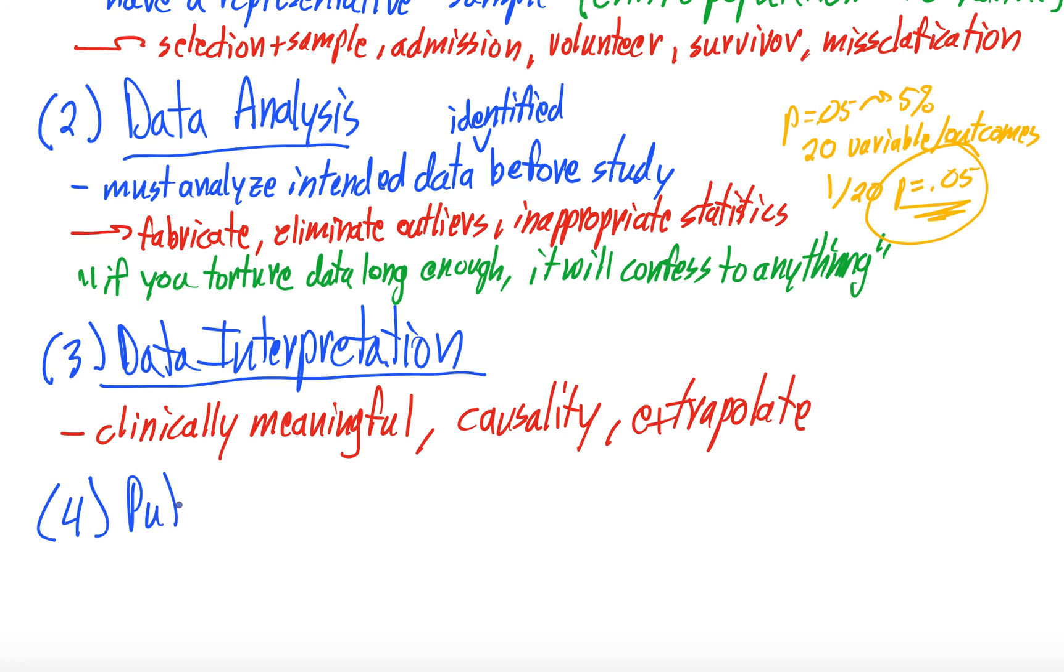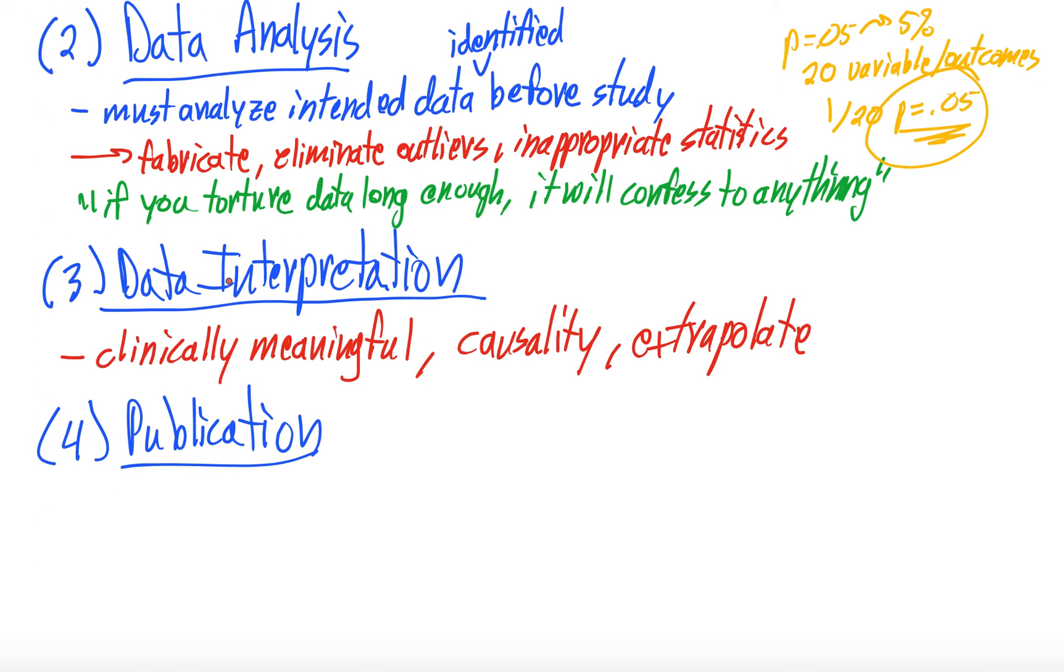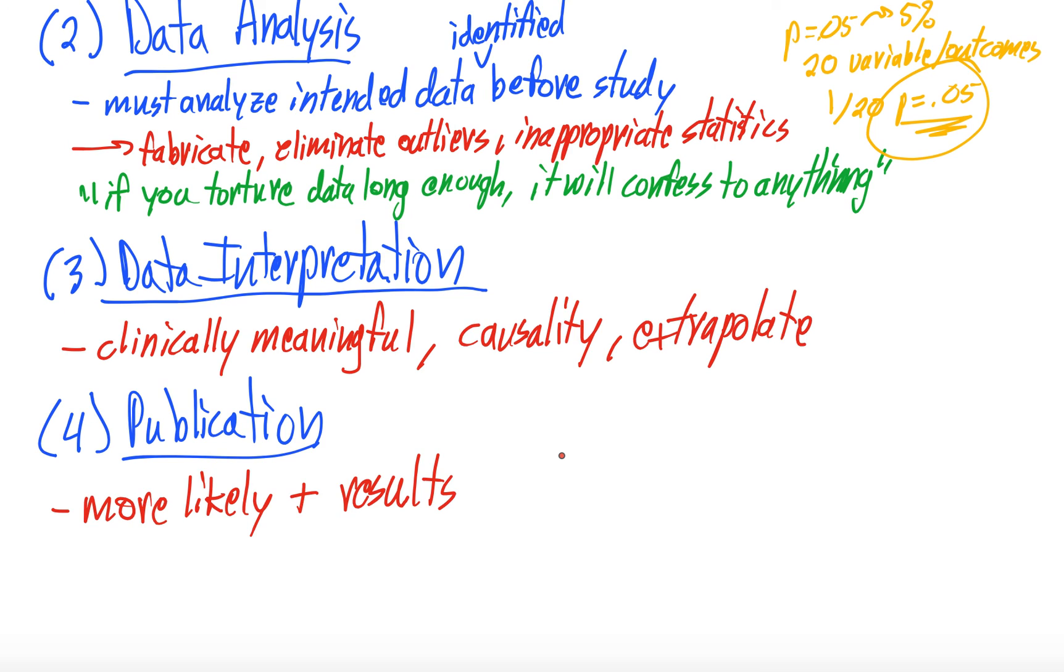And then the last thing, which is just quick, is publication. We gathered our data, we analyzed our data, we interpreted our data, and now we're publishing it. The fact of the matter is, journals are more likely to publish positive results. And that leads to a huge publication bias, because there might be three papers with negative results, and then they published the one with positive results. Some journals are better, and other journals are doing this. But it's something to keep in mind that journals are more likely to publish positive results. In the COVID literature, though, we've seen that a lot of journals have maintained the good practice of publishing both positive and negative results.